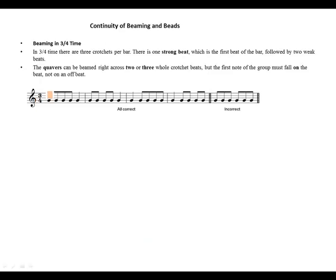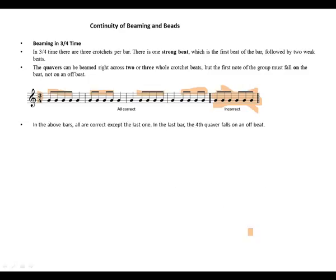Looking at 3/4 examples: we have beamed quavers and a crotchet. All bars shown are correct except the last bar — in the last bar, the fourth quaver falls on an offbeat, which is not allowed. The first note of a beamed group must always fall on a beat.